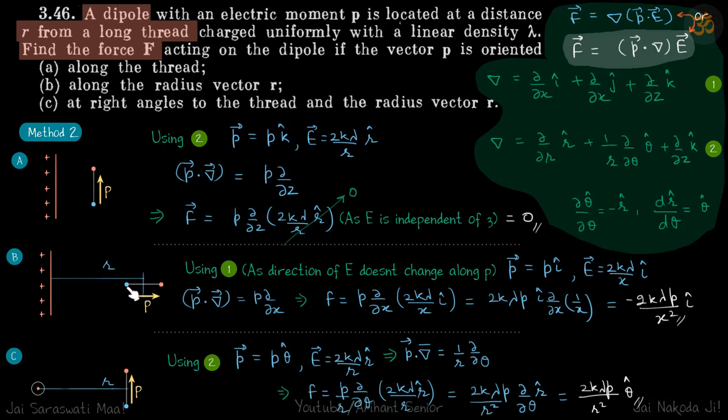Second case, the dipole is aligned perpendicular to the wire. So p vector we can write as p i cap and E vector we can write as 2k lambda by x i cap. So now we have both the terms for i cap and within E we can see that the term is of x and p is also aligned along x. So we can use our first equation because everything is happening along x direction.